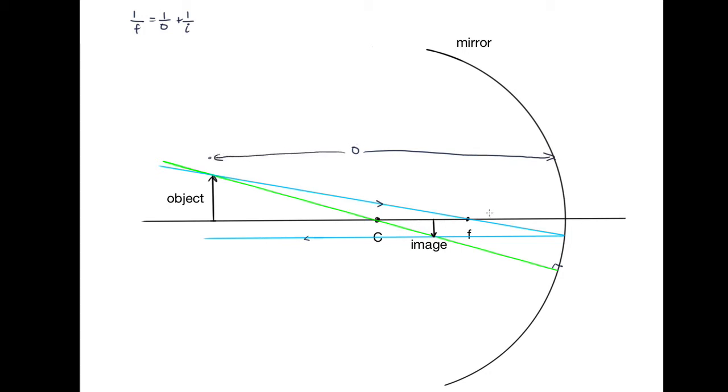I is the distance to the image, so it's this distance along here. And F is the distance to the focal point, so it's this length here.